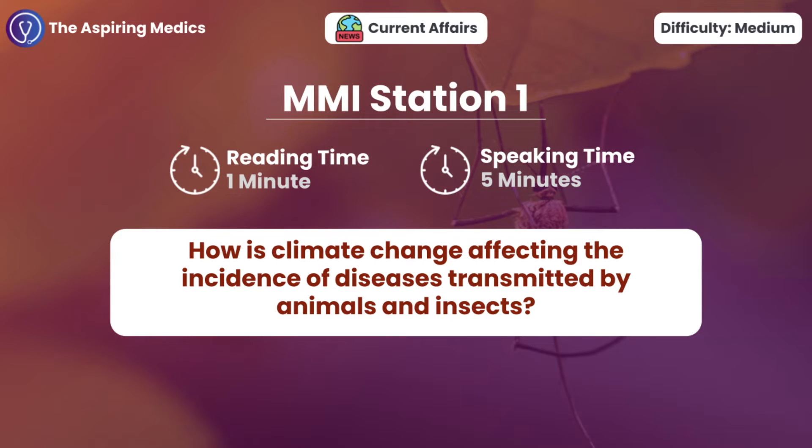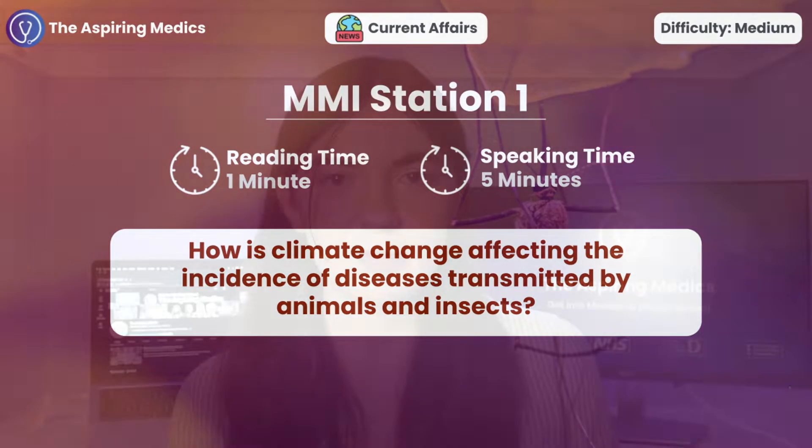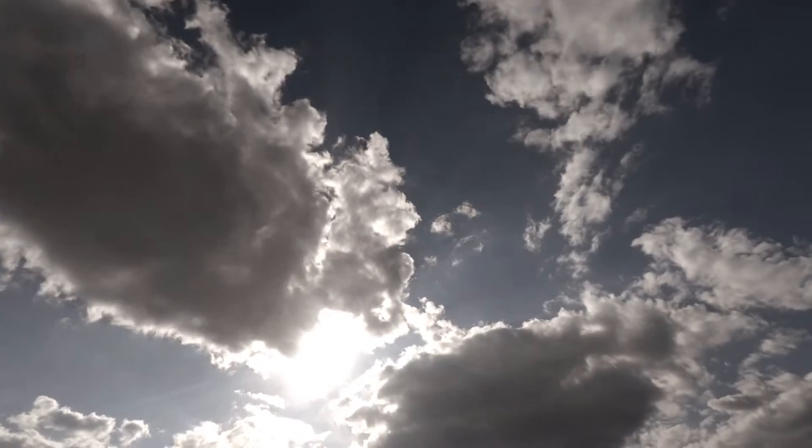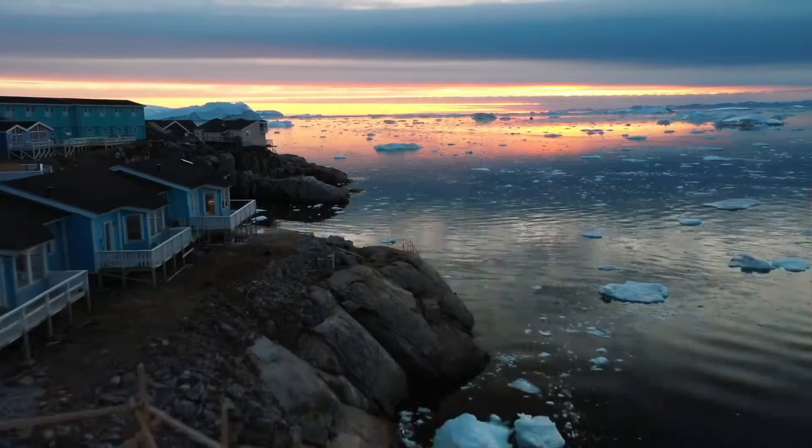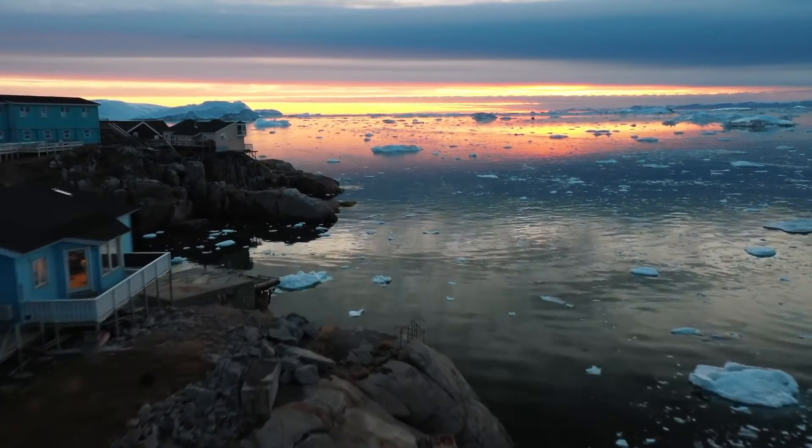How is climate change affecting the incidence of diseases transmitted by animals and insects? I understand climate change to mean changing weather patterns in certain areas. For example, certain countries may be experiencing warmer climates that were previously colder, or there may be changes in humidity — countries that were previously less humid becoming more humid. It's all about these changing weather patterns.